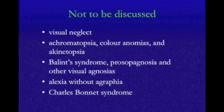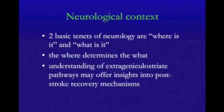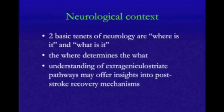The two basic tenets of neurology are: where is it and what is it? We've taught this for over 100 years. Neurologists are really only interested in the neuroanatomy to narrow it down — the where determines the what and therefore narrows a differential diagnosis considerably. In the context of stroke, we're also interested in the where because recovery mechanisms are very much driven by non-classical pathways — particularly the extra-geniculate-striate pathways, which are very important.